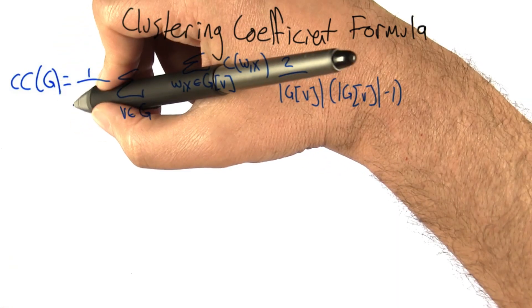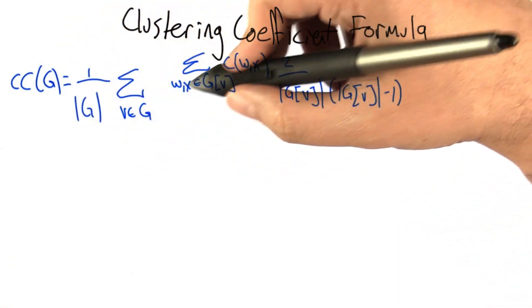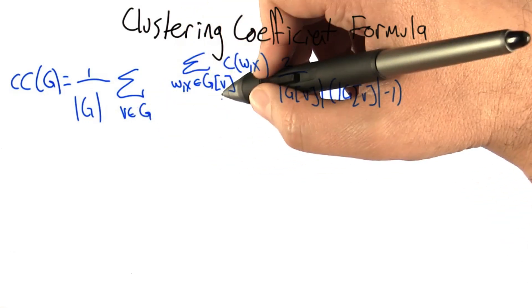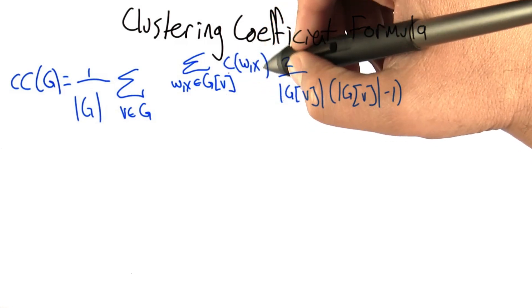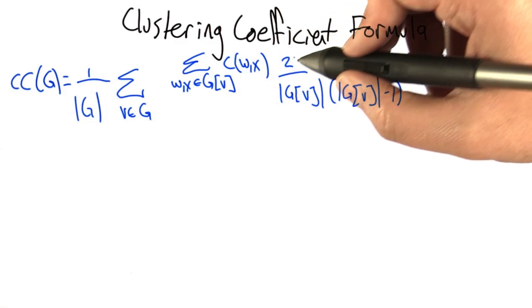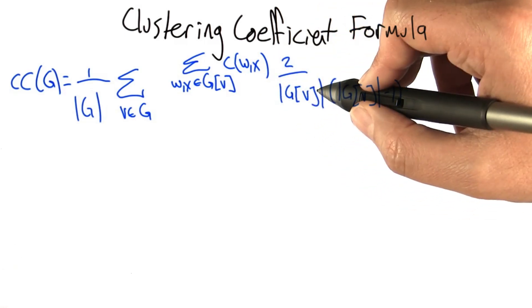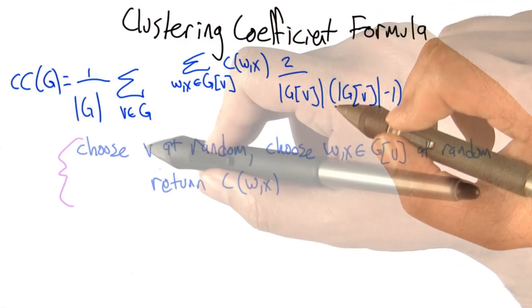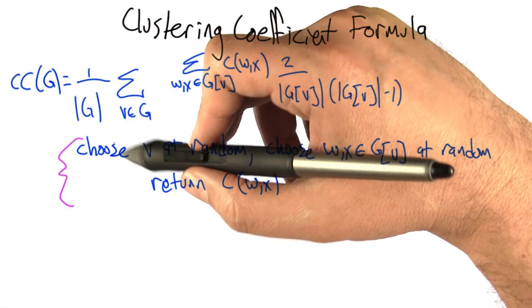Here's a formula for the clustering coefficient. The clustering coefficient of a graph, you have to sum all the nodes in the graph, we're going to average it for the n nodes in the graph. And then for each of those nodes what we do is sum up for all the pairs of nodes that are neighbors of the node v, we sum up whether or not they're connected. And then we scale that by taking the number of possible connections, 2 over the neighbor size of v times the neighbor size of v minus 1.